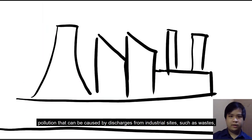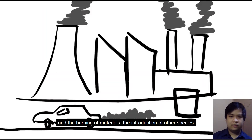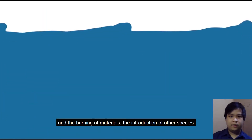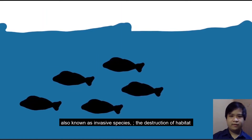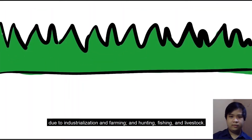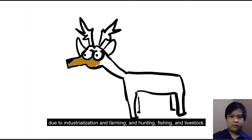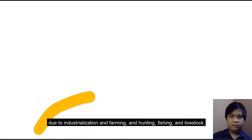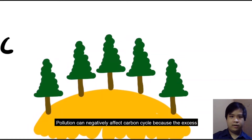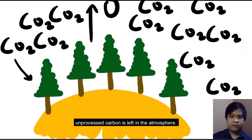Pollution can be caused by discharges from industrial sites such as waste and the burning of materials. The introduction of other species, also known as invasive species. The destruction of habitat due to industrialization and farming. Hunting, fishing, and livestock. Pollution can negatively affect the carbon cycle because excess unprocessed carbon is left in the atmosphere.